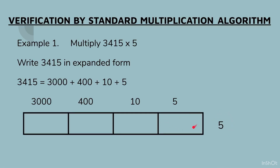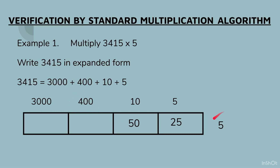To get the number in the first box, we multiply 5 by 5 — 5 fives are 25. Then we multiply 10 by 5 to get 50. To get the answer in the next box, we multiply 400 by 5, which gives us 2000.